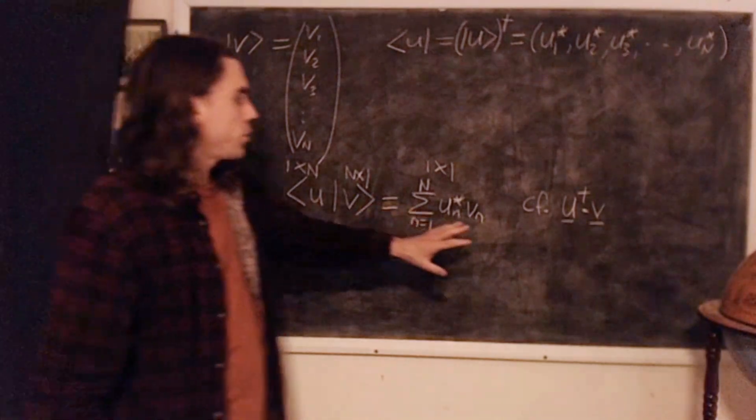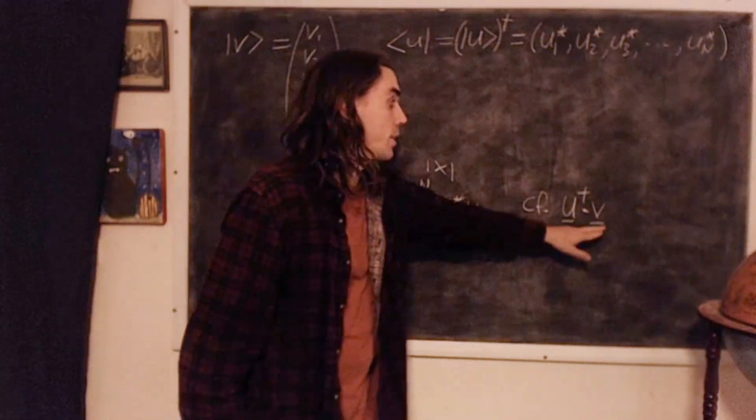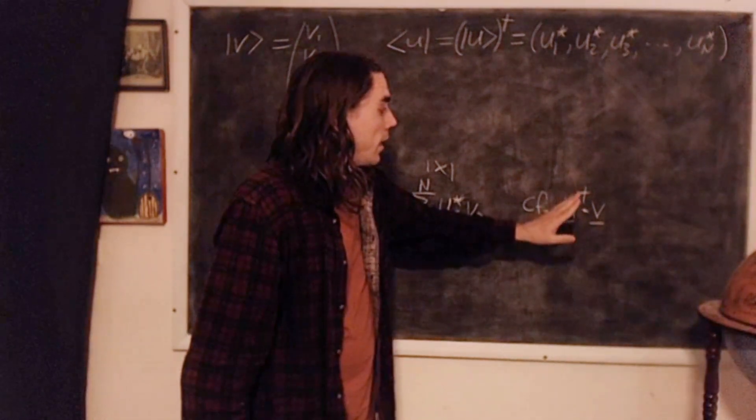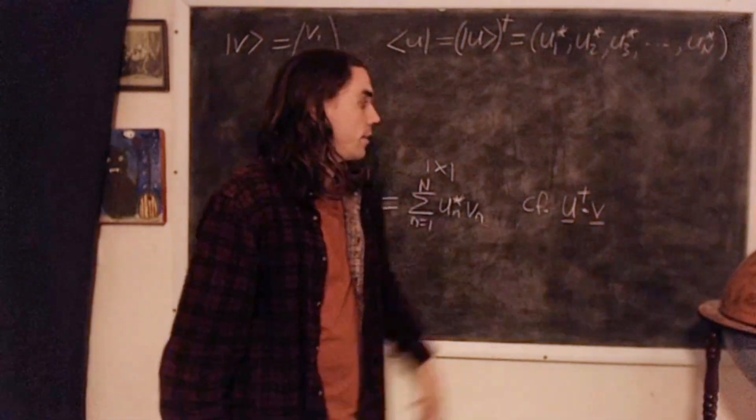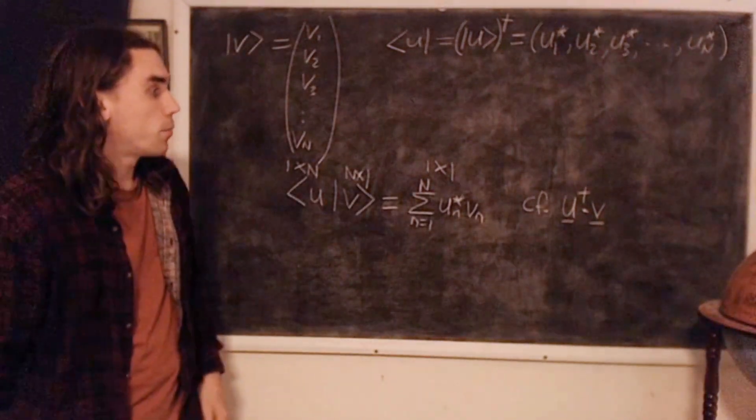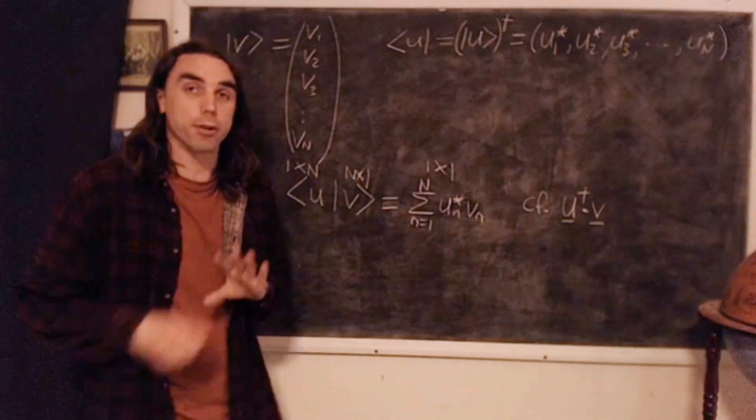So compare this to our usual, or the perhaps more familiar, vector notation, where we just underline, or we could use bold and so on. But if we take u dagger dot v, where dot is the dot product or the inner product, then we would also get this complex scalar, we get the same thing. So that's all we're doing here, it's just a different notation.